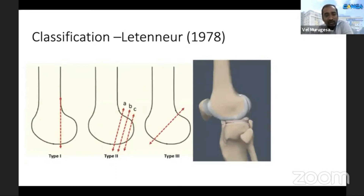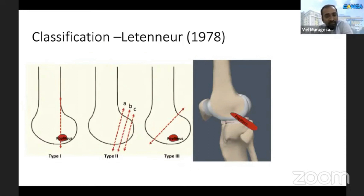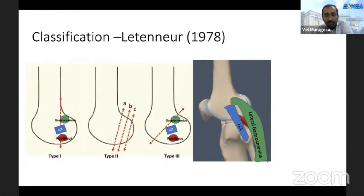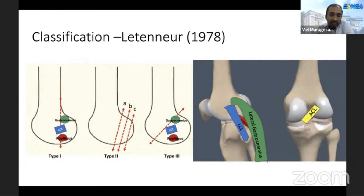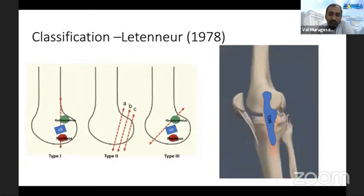In 1978, Leternal classified Hoffa fractures into three types. Type 1 has a vertical fracture line which is a continuation of the posterior femoral cortex. Type 2 fractures are purely articular fractures with no soft tissue attachment. Type 3 fractures have a more oblique fracture line. Regarding soft tissue attachments: popliteus attaches just inferior to the lateral epicondyle, the lateral collateral ligament attaches to the lateral epicondyle, and the lateral head of gastrocnemius attaches superior to the LCL insertion.